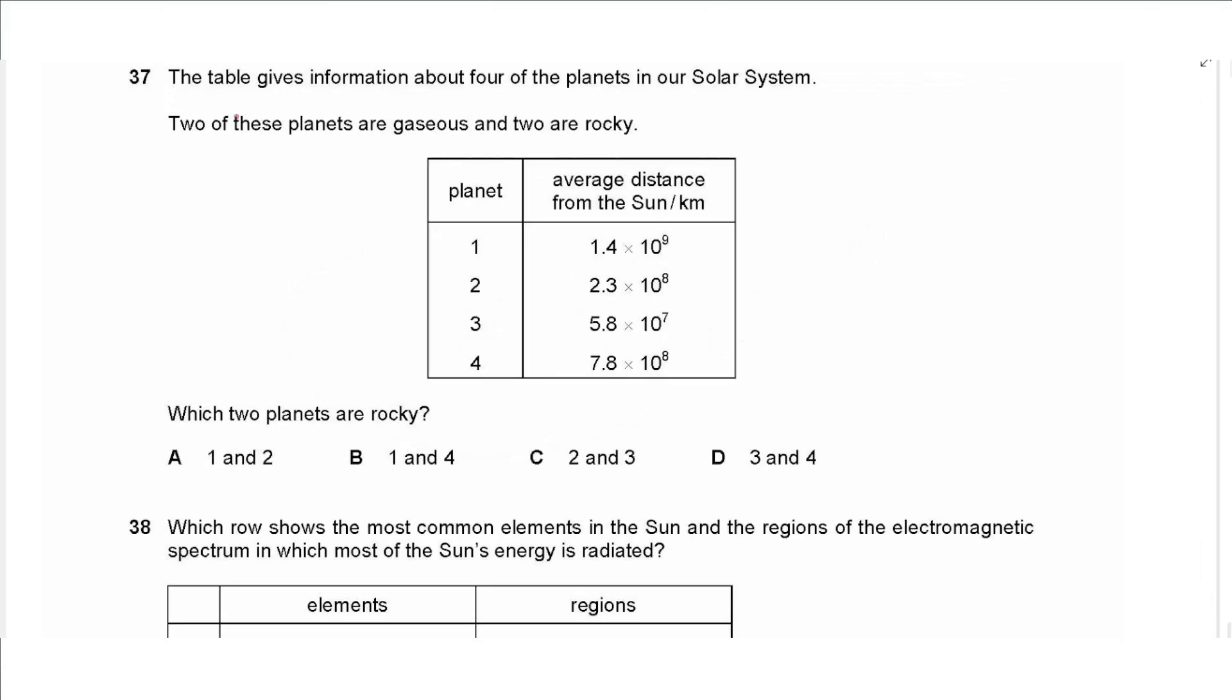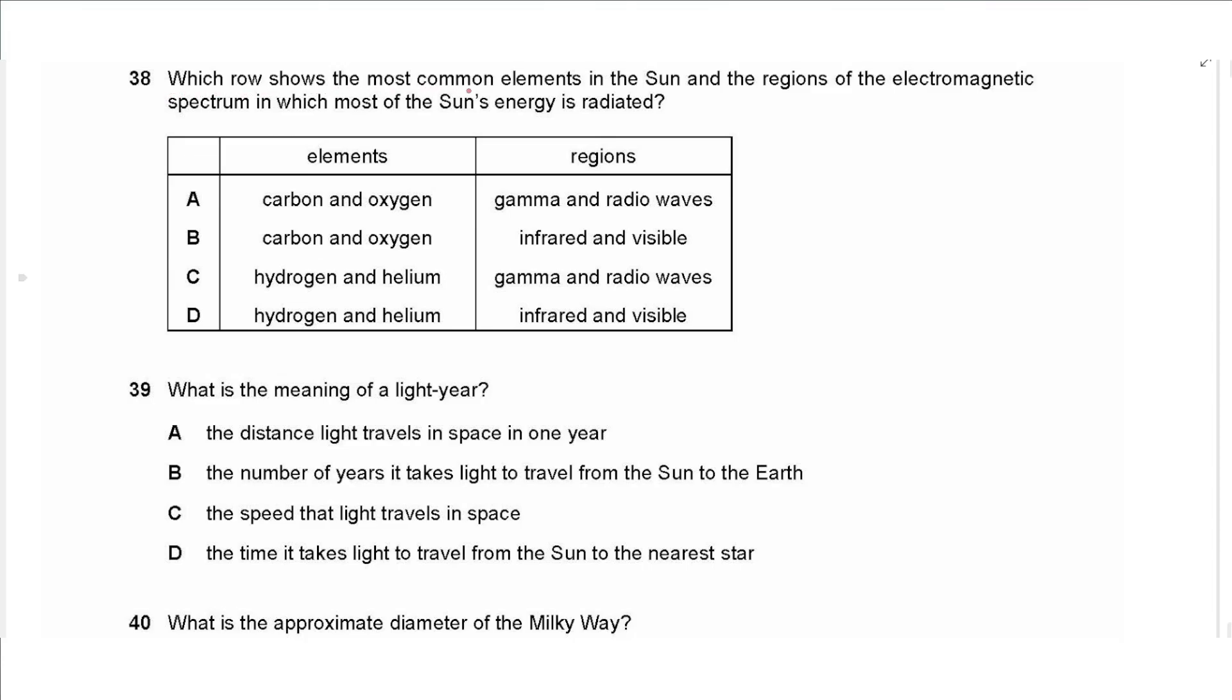Question 37 says the table gives information about four of the planets in our solar system. Two of these planets are gaseous and two are rocky. Which two planets are rocky? That's inner planets, so they will have lower distance. So the smallest distance will be the 10 to the power of seven. Next is 2.3 times 10 to the power of eight. Next the 7.8 times 10 to the power of eight, and the largest distance is 1.4 times 10 to the power of nine. So these two planets are the rocky planets, the inner planets. So we choose C, two and three.